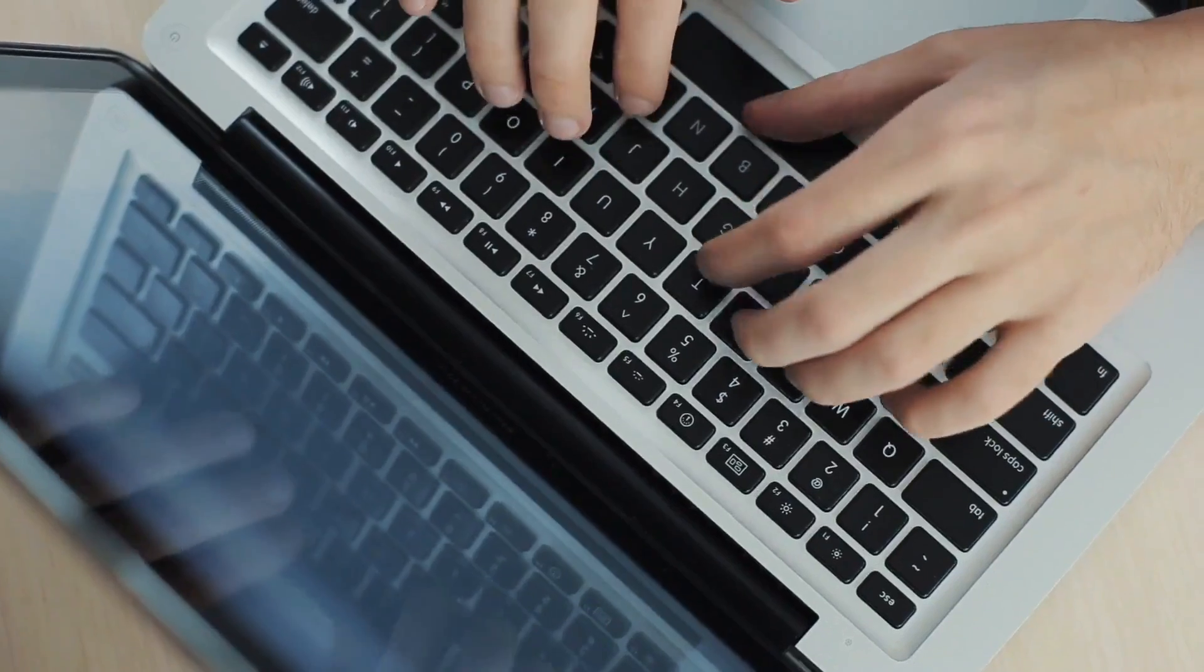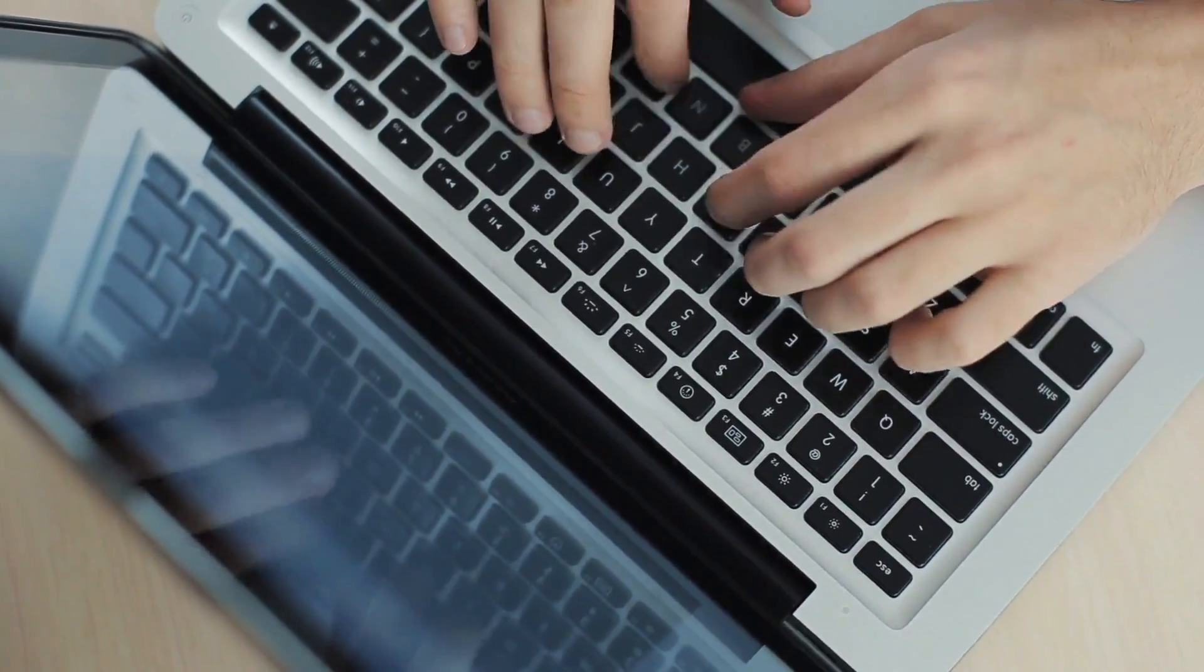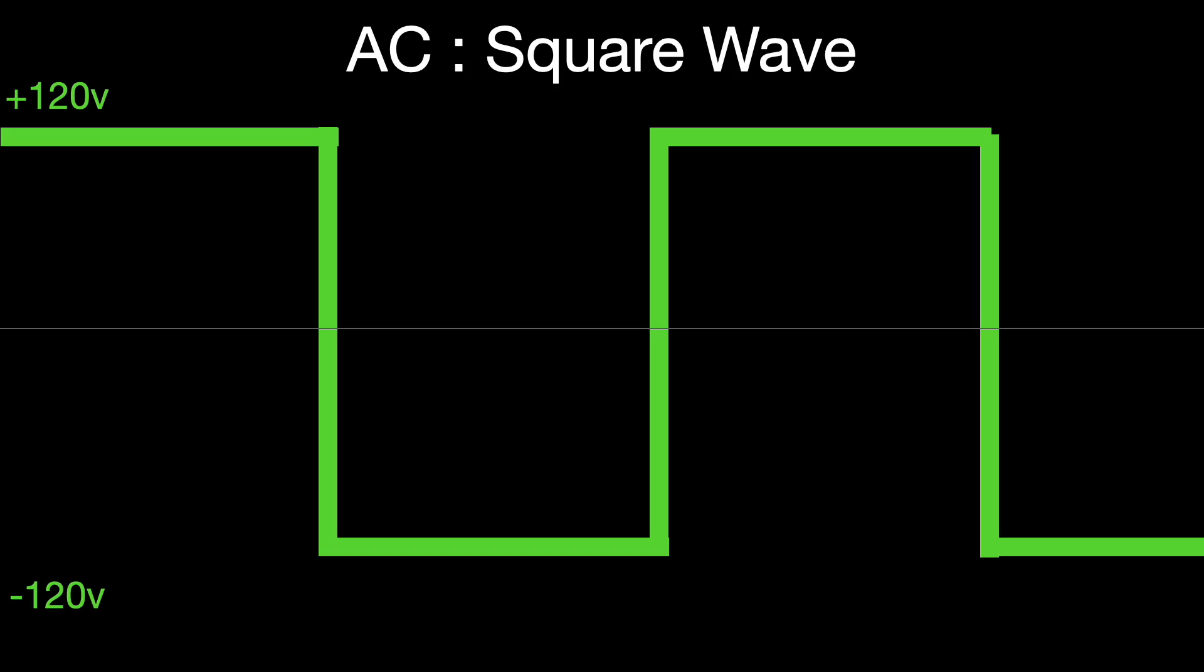Now electronic equipment does not like to use a square wave. You can run some things off of it, maybe some lighting and heaters, motors and things like that. But most electronic equipment doesn't like this.